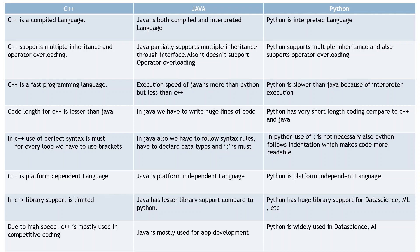The first difference: C++ is a compiled language, Java is both compiled and interpreted, and Python is an interpreted language. Compiled languages need to be compiled and not interpreted, whereas in interpreted languages, an interpreter reads and executes the code — there is one extra step. Remember: C++ is compiled, Python is interpreted, and Java is both.